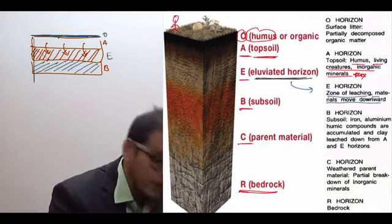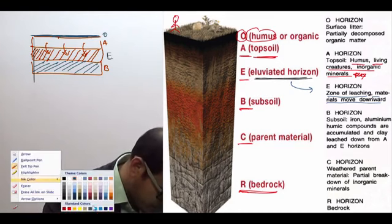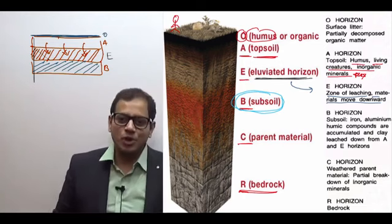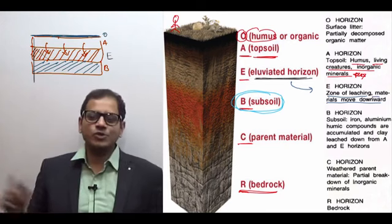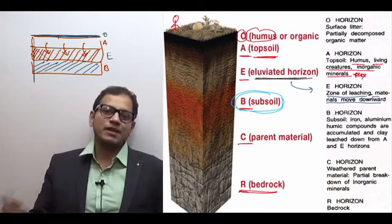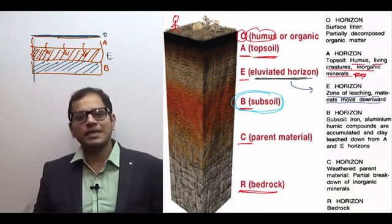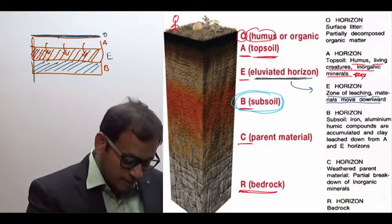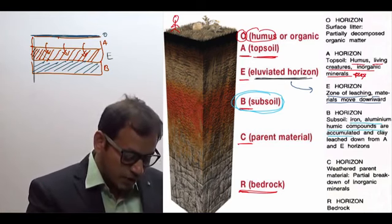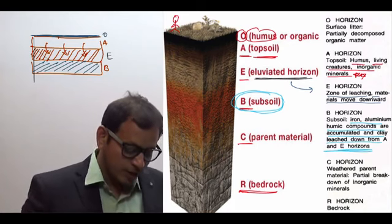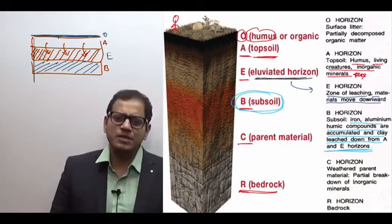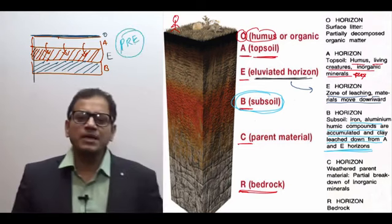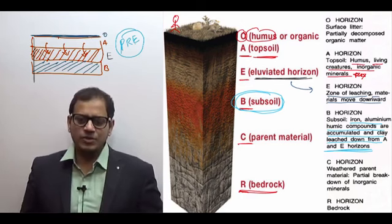After the E layer comes the B layer, which is known as the subsoil. If the A layer is the topsoil — the topmost — then B layer is the sub, that is the subsoil. The subsoil consists of iron, aluminium, and humic compounds that accumulate there, as clay is leached down from the A and E horizons.